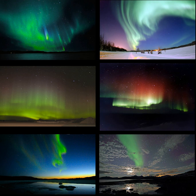Auroras result from emissions of photons in the Earth's upper atmosphere, above 80 km, from ionized nitrogen atoms regaining an electron, and oxygen atoms and nitrogen-based molecules returning from an excited state to ground state. They are ionized or excited by the collision of particles precipitated into the atmosphere. Both incoming electrons and protons may be involved. Excitation energy is lost within the atmosphere by the emission of a photon, or by collision with another atom or molecule.